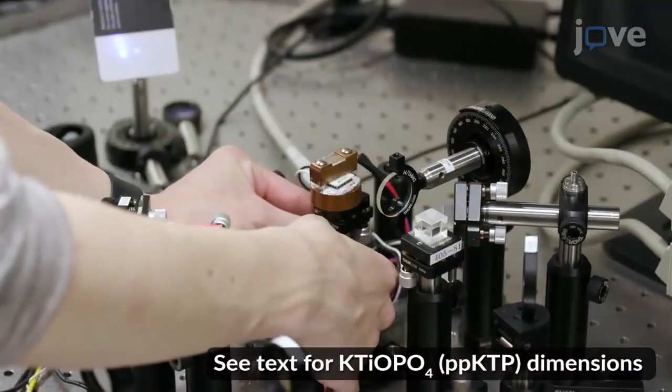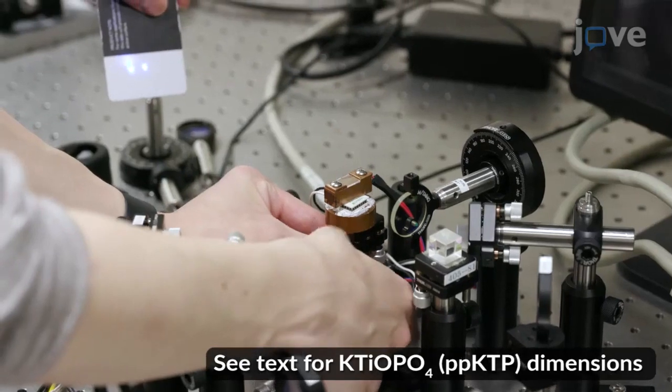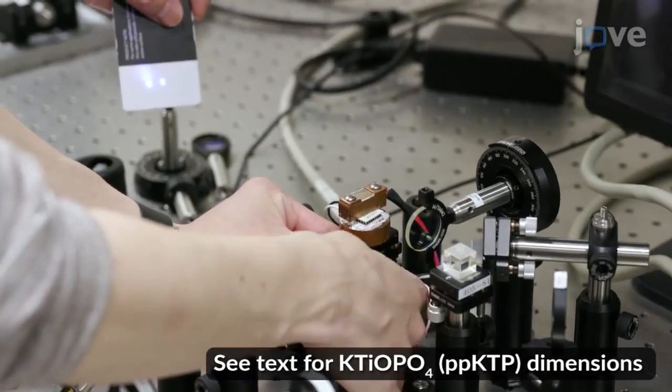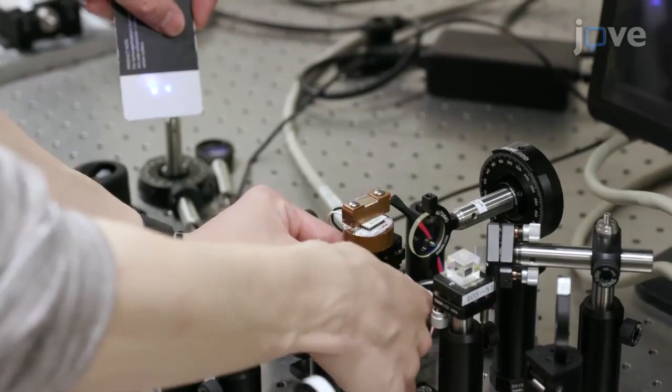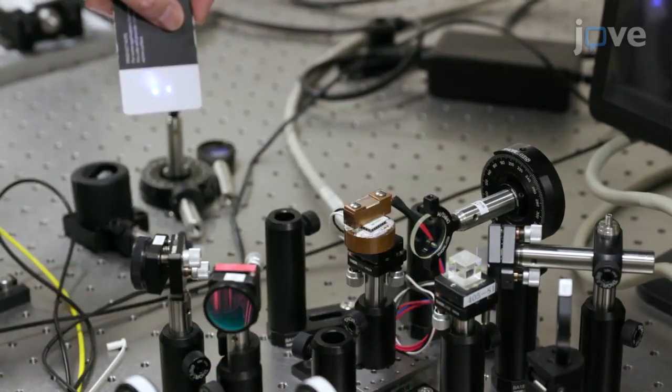Place a type 0 PPKTP crystal on a temperature-controlled platform mounted in the path of the beam. Adjust the platform until the split beams pass through the crystal.